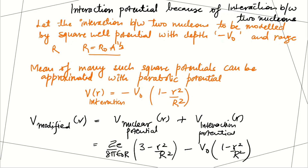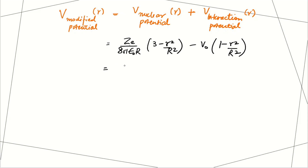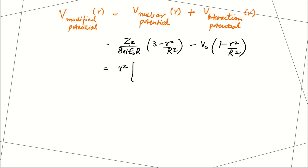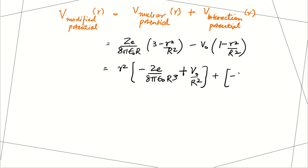Now let's write the modified nuclear potential, which comprises two parts — the nuclear potential and the interaction potential. Combining them: V_total = Ze/(8πε₀R) · (3 − r²/R²) − V₀(1 − r²/R²). Taking the r² terms together, the coefficient of r² is: −Ze/(8πε₀R³) + V₀/R², plus the remaining constant terms −V₀ + 3Ze/(8πε₀R).